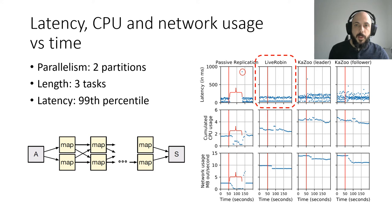For LiveRobin, the 99th percentile stays stable, a bit higher than the passive replication. For Kazoo, we have considered crashing a leader task manager and a follower task manager. We can see here that for the leader, an increased latency just after the crash. This is caused by the lag before the leader is not considered to be available anymore and the leader election itself. This higher latency after a crash will happen, depending on the parameters set in the leader election algorithm and Zookeeper in our case.